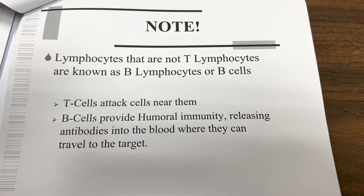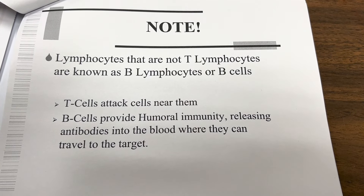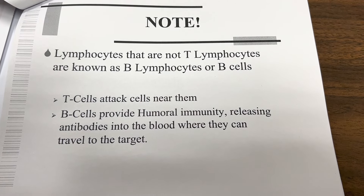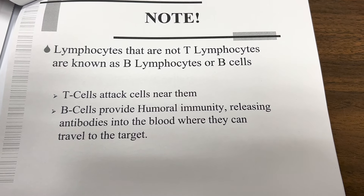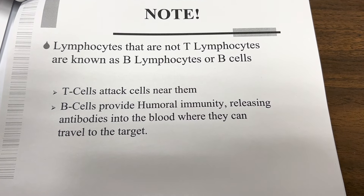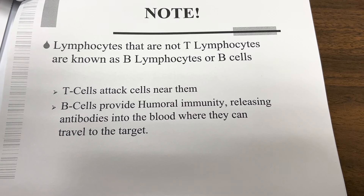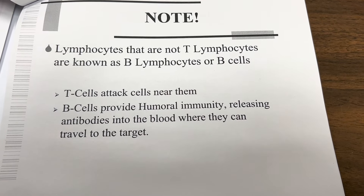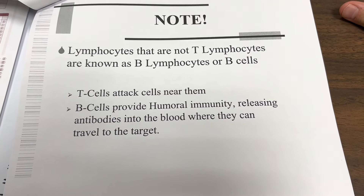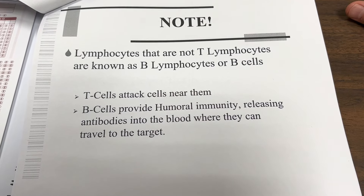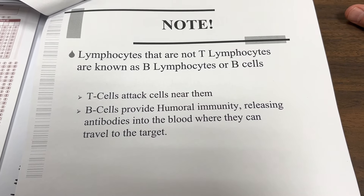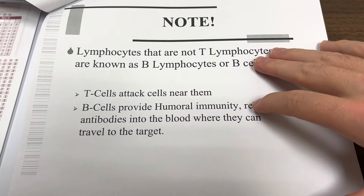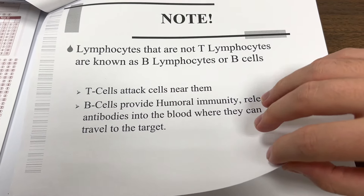Lymphocytes that are not T lymphocytes are known as B lymphocytes, or B cells. T cells attack cells near them, while B cells provide humoral immunity, releasing antibodies into the blood where they can travel to fight infection.